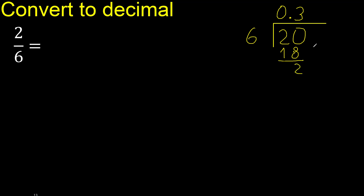That remainder is not a single digit, therefore complete — always complete with 0. The decimal point is here: 0.20.